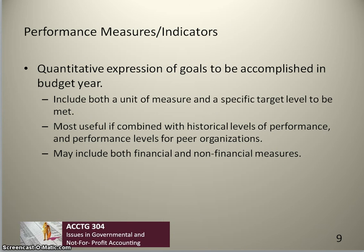When an organization uses performance or zero-based budgeting, it will usually include performance measures or indicators in its budget. Performance measures are quantitative expressions of the goals to be accomplished in the budget year. They generally include both a unit of measure and a specific target, and are most easily interpreted when combined with historical performance data or performance levels of a peer organization. Performance measures may include both financial and non-financial measures — in fact, most are non-financial in nature.